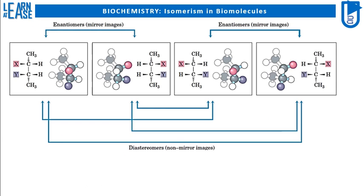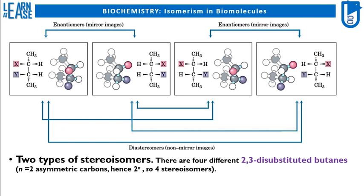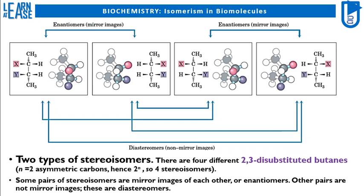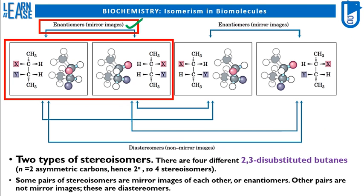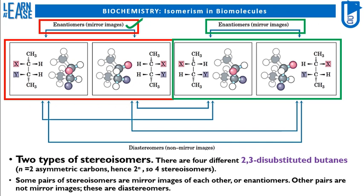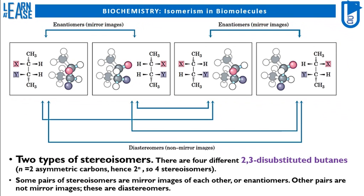The image shows four different 2,3-disubstituted butanes, where asymmetric carbons are two, so N equals two, hence this molecule possesses 2^2 — that is, four — stereoisomers. The first set of enantiomers is shown by the red outlined box, where both molecules are mirror images of one another. Similarly, the second set of enantiomers is shown by the green outlined box. Any molecule from the red highlighted box is not the mirror image of any molecule in the green highlighted box, so these molecules are called diastereomers. One possible pair of diastereoisomers is shown by a new red highlighted box.